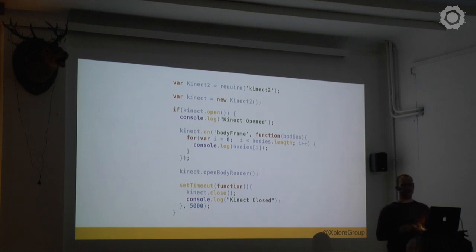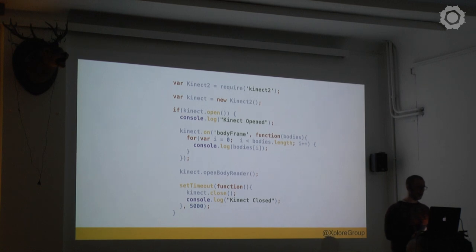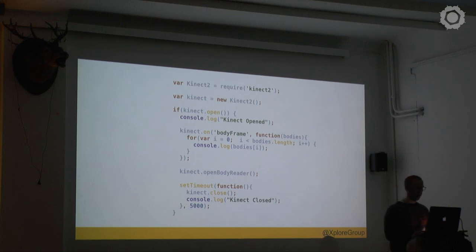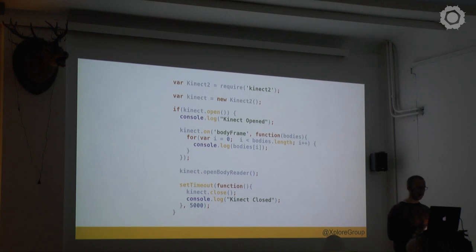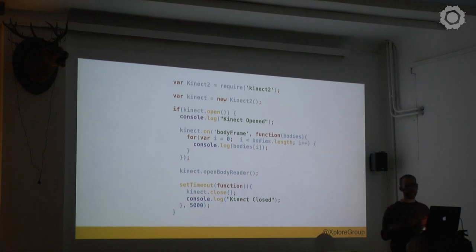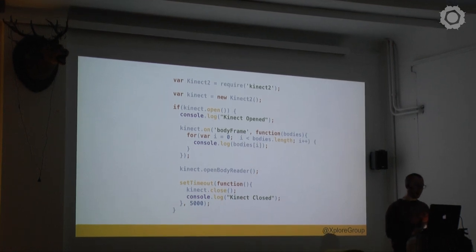This is actually the only piece of code you'll need to get up and running to create a hello world application and start tracking bodies in your frontend. You instantiate your Kinect. If the Kinect is opened — meaning all the lights are on — you start registering and can hook up to a body frame, get webcam feed, depth feed, infrared, or stuff like that. We are just tracking bodies and after five seconds the Kinect closes off.